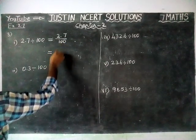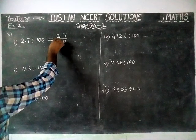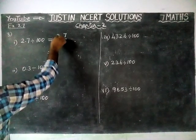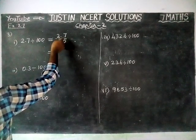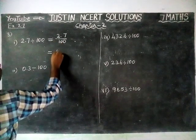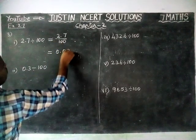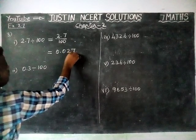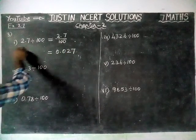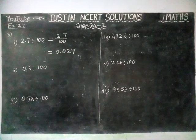So the answer for the first sum, 2.7 divided by 100: already we have one decimal step, so we have to move one more step. The answer is 0.027.